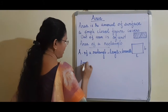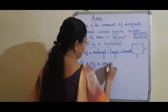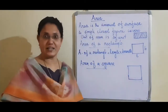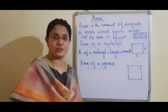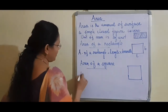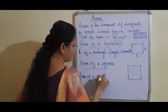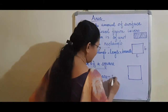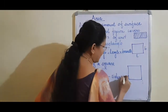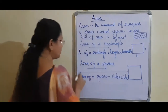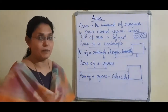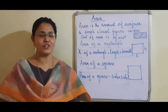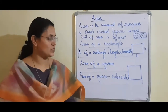Similarly, we can find the area of a square. For a square, all its sides are equal. If one side is 4, all other sides are also 4. Area of a square is side into side. Area of a rectangle is length into breadth. You should also remember: perimeter of a rectangle is 2 into (L plus B), and perimeter of a square is 4 into side. Area of a square is side into side.